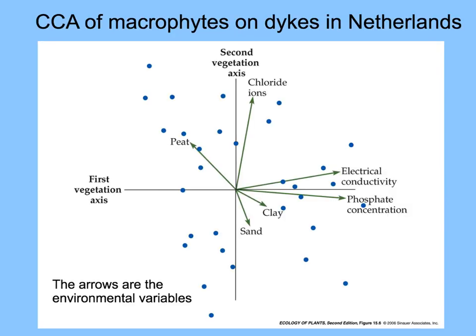In this example looking at macrophytes — larger plants growing on dikes in the Netherlands — each of the arrows represents an environmental variable. Along the sand and clay axes, which are two different kinds of soil components, different samples are closer along these axes than sites that tend to group with peat. For some of the samples or sites, the most important axis is the concentration of phosphate.